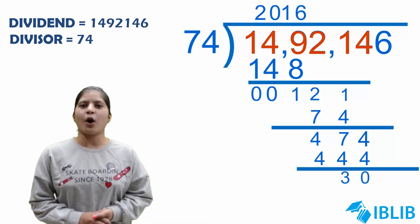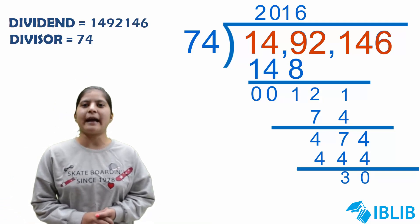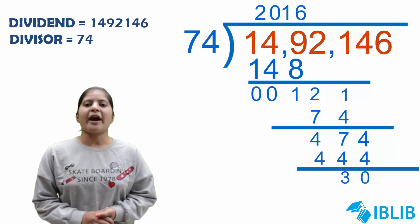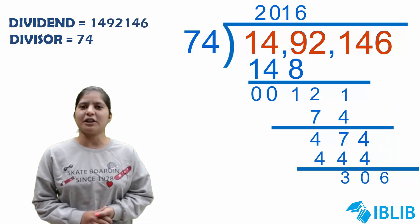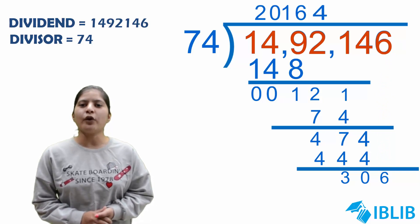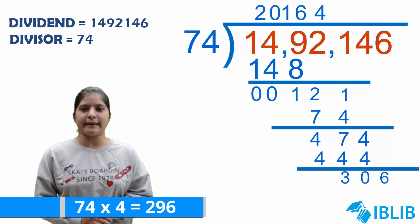Now, we will bring down the last digit of the dividend that is 6. We are having 306. It means we have to divide 306 by 74. 74 times 4 will give us 296. We will write it below 306.